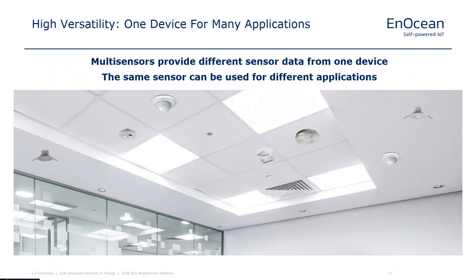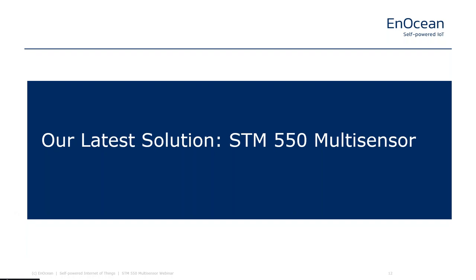Another important aspect is versatility — you want one device that can enable many different applications depending on how your office is utilized. A multi-sensor allows you to gather different sensor data from the same device: use it as a temperature and humidity sensor to control your HVAC system, as a window sensor to detect if a door or window is open or closed, or as an acceleration sensor to measure asset utilization. Our latest solution addressing these requirements is the STM 550 multi-sensor.